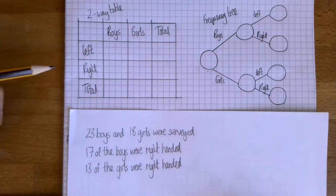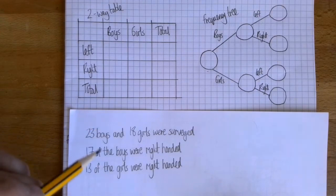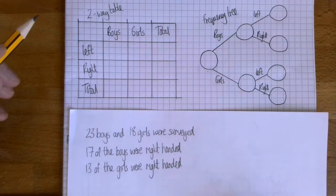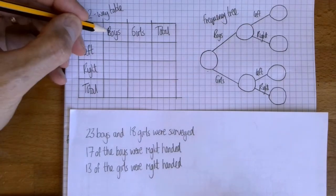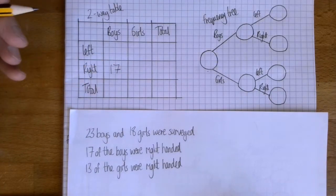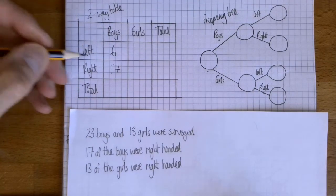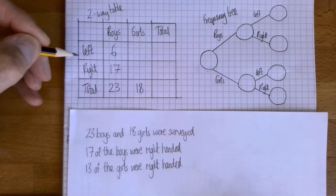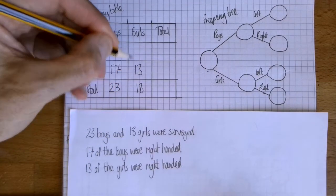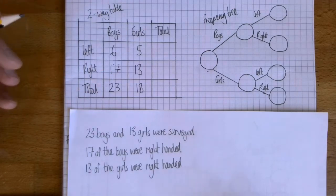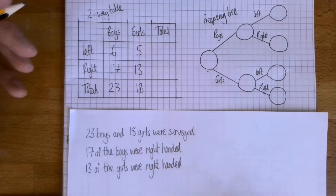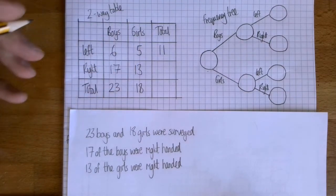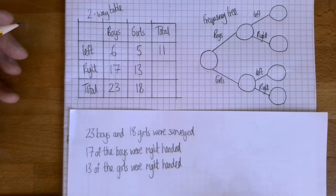So here's my two-way table. I've got 23 boys, 17 of them were right-handed, so that means that six of them must have been left-handed. I had 18 girls in total and 13 of them were right-handed, so that means five of them must be left-handed. So I can then do the totals for left and right-handed. In total across boys and girls, I've got 11 left-handed people and I've got 30 right-handed people.